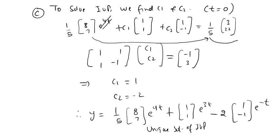In summary: to verify that a certain function is a solution, you fit it into the equation as we do for ordinary differential equations. To find the solution of an IVP, you find constants c1 and c2 using the given initial condition — in this case, the solution at t = 0 was given.